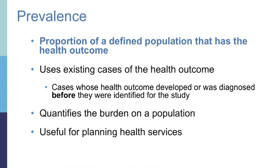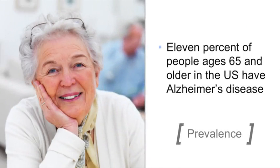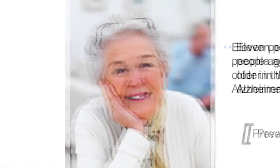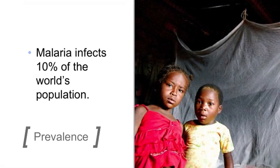Prevalence can also be useful for planning health services. For example, 11% of people over 65 and older in the United States have Alzheimer's disease — this statistic is an example of a prevalence. Malaria is a life-threatening disease caused by parasites transmitted to people through the bites of infected mosquitoes. Malaria infects 10% of the world's population, which is also an example of a prevalence.